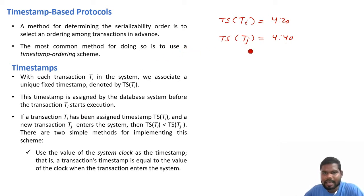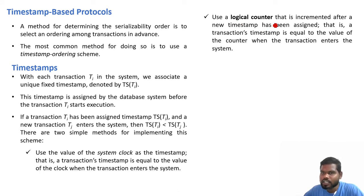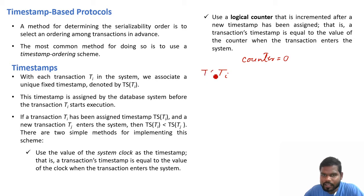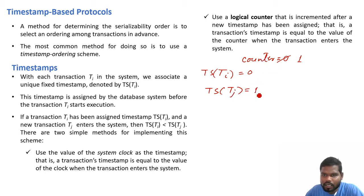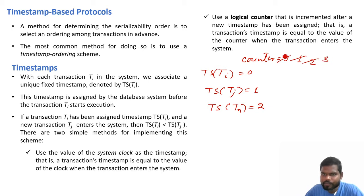The second scheme uses a logical counter that is incremented after a new timestamp has been assigned — a transaction's timestamp equals the value of the counter when the transaction enters the system. The logical counter variable is initially assigned 0. When transaction Ti enters, TS(Ti) equals 0 and the counter increments to 1. When TJ enters, TS(TJ) equals 1 and the counter increments to 2, and so on. In this way you can use either a logical counter or a system clock to assign timestamps to transactions.